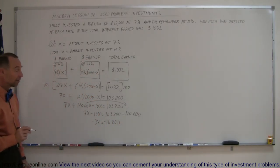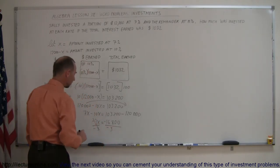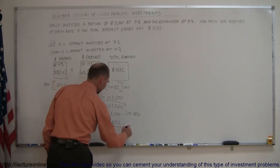And now the last part: if we divide both sides by the numerical coefficient in front of the x, the negative 3s cancel out, the negatives cancel out, and this gives me 5,600.